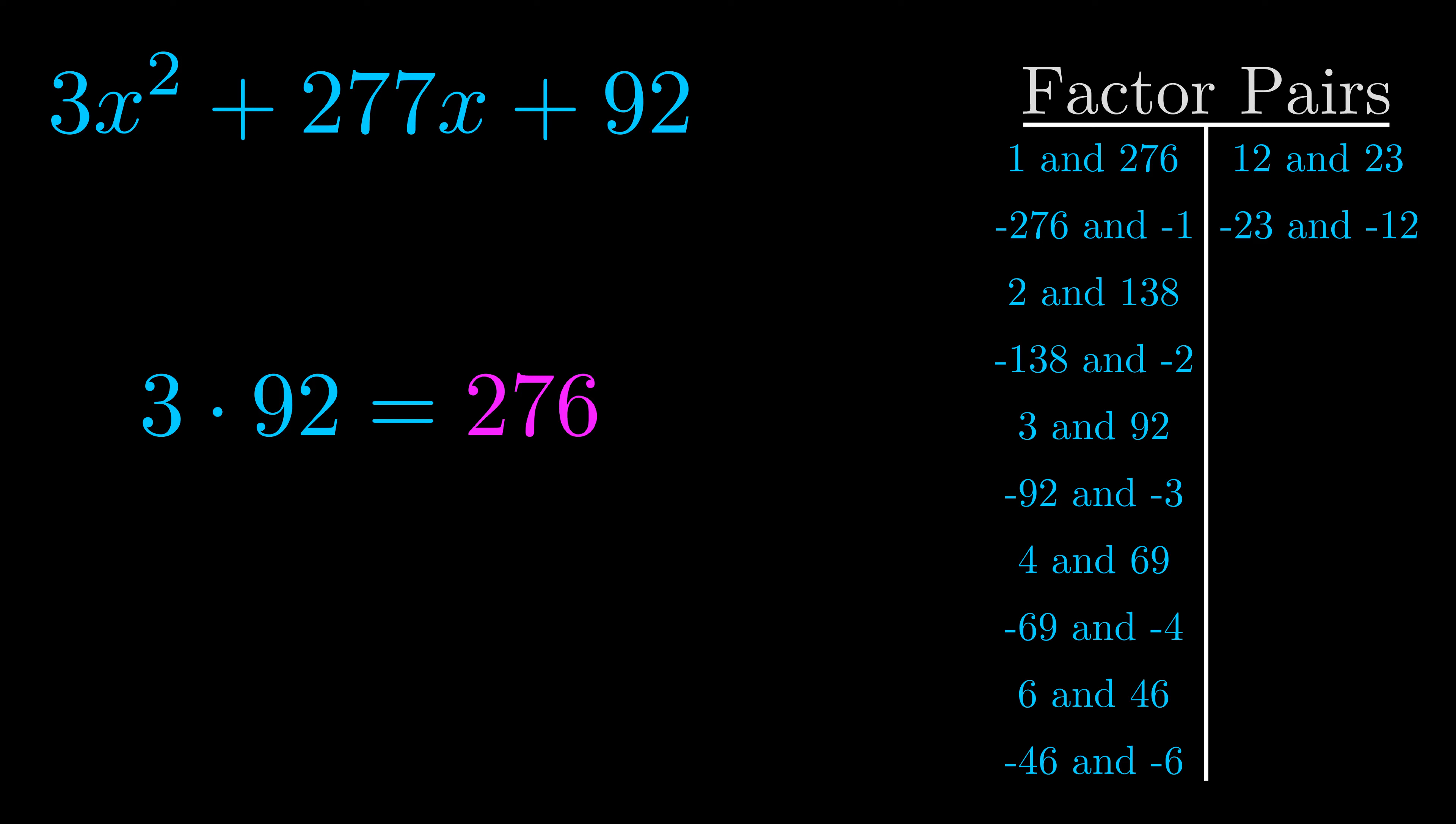The b value is the coefficient on the x term. That's the middle term, the one that we haven't done anything with yet. And really this is the only factor pair that we need.